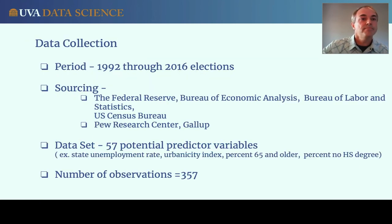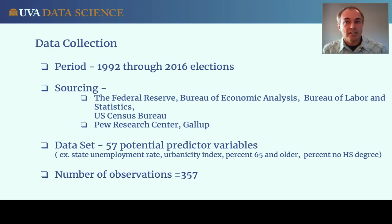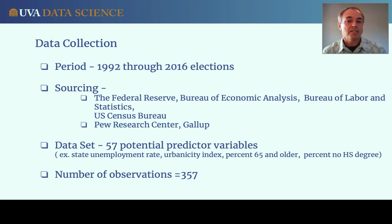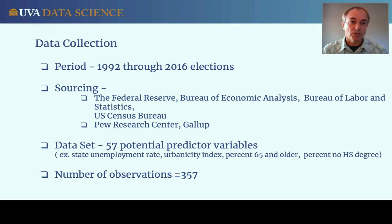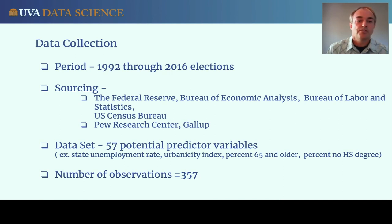In the data collection phase, they gathered economic and demographic data at the state level, limited by availability to the past seven elections from 1992 through 2016. Data was collected from several local government agencies and two social research survey organizations, ultimately compiling 57 different state-level predictor variables. The dataset has 357 observations — 50 states plus DC over seven election cycles — making it a relatively small N.